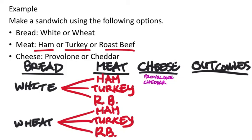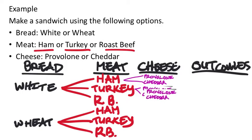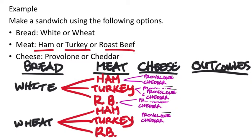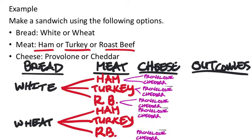If you chose ham, you could have provolone or cheddar. It's the same two choices from turkey — provolone or cheddar — and the same from roast beef. Then for wheat bread, you've got the same meats — ham, turkey, or roast beef — and from each of those, you can choose provolone or cheddar.